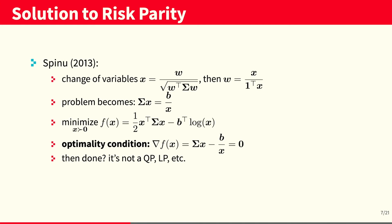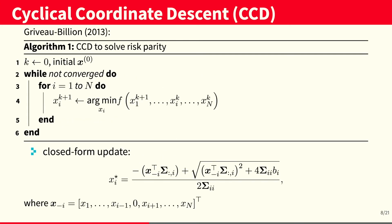However, this convex problem is not in a nice form, i.e., it's not a QP or an LP. Therefore, in 2013, Griff Billen proposed a cyclical coordinate descent algorithm to solve this problem.